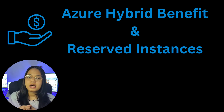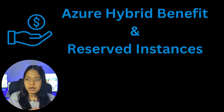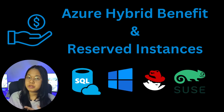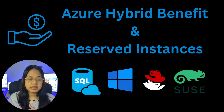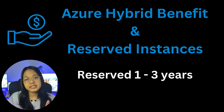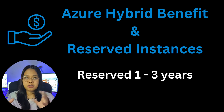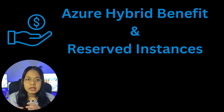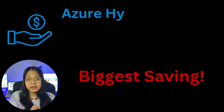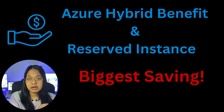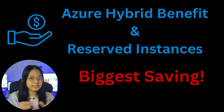Number three: we used Azure Hybrid Benefit and Reserved Instances to optimize their environment. Azure Hybrid Benefit can save costs up to 80% of the monthly cost, especially if you run SQL on Azure, Windows Server, Red Hat Server, or SUSE Enterprise Server on Microsoft Azure. For Reserved Instances, you can reserve up to one to three years on Microsoft Azure and it can save you up to 75%. The combination of Azure Hybrid Benefit and Reserved Instances is the biggest saving in this project — for anyone wanting to save a lot of money on their Microsoft Azure environment, this combination is perfect.